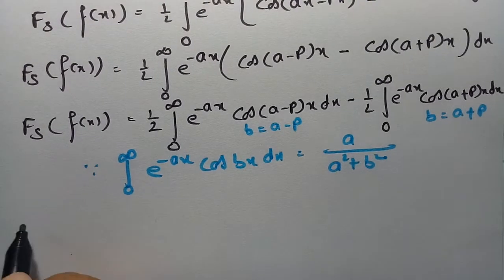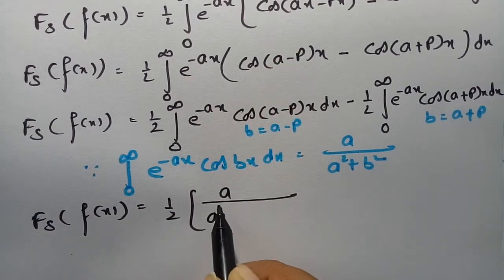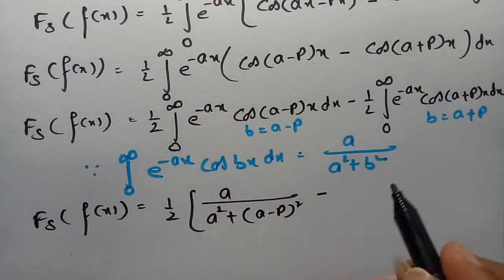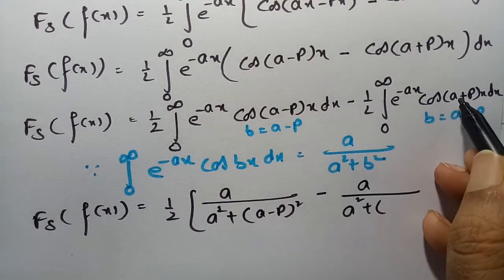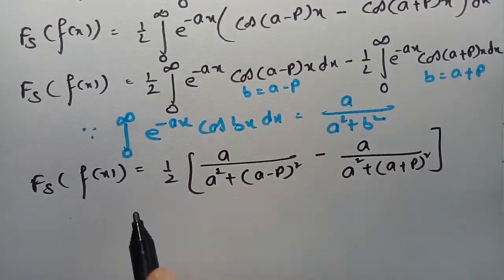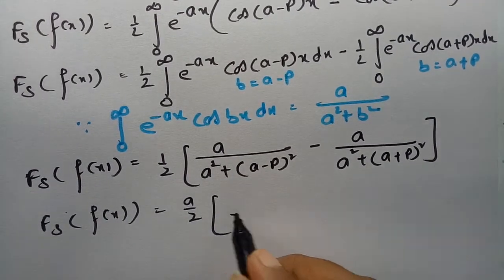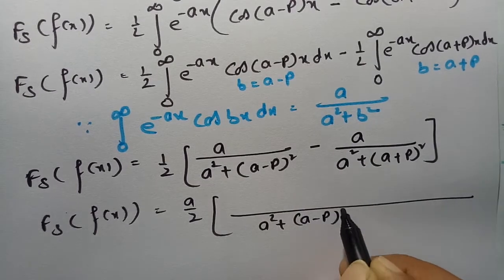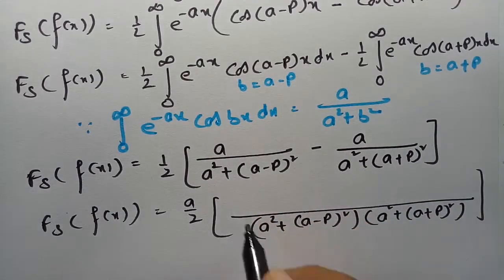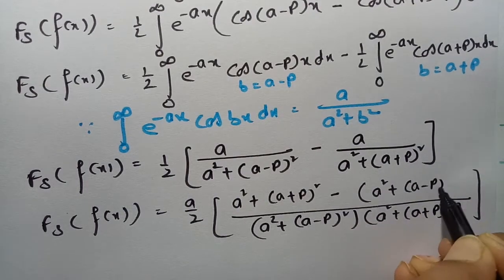Substituting into the formula, the Fourier sine transform of f(x) equals one half times [a / (a² + (a - p)²) - a / (a² + (a + p)²)]. Taking a as common and finding the LCM, the numerator becomes [a² + (a + p)²] - [a² + (a - p)²].